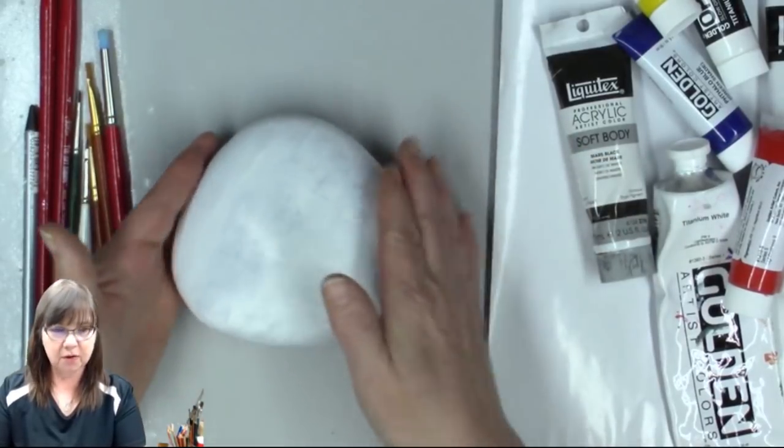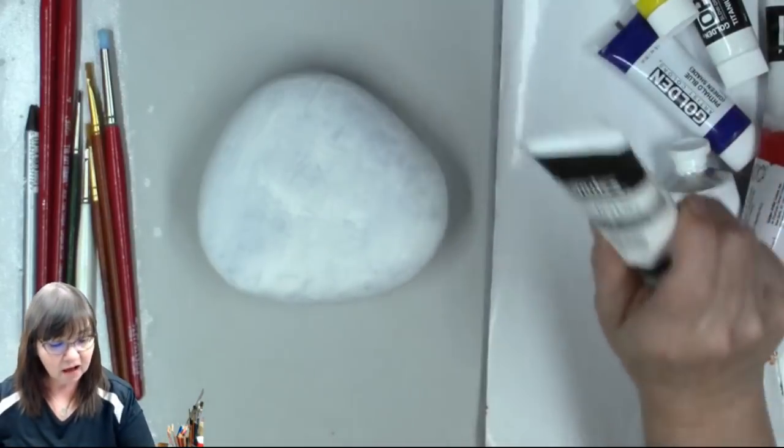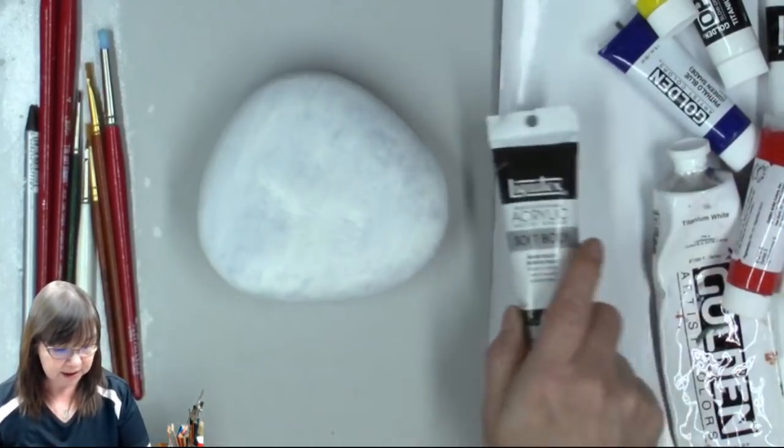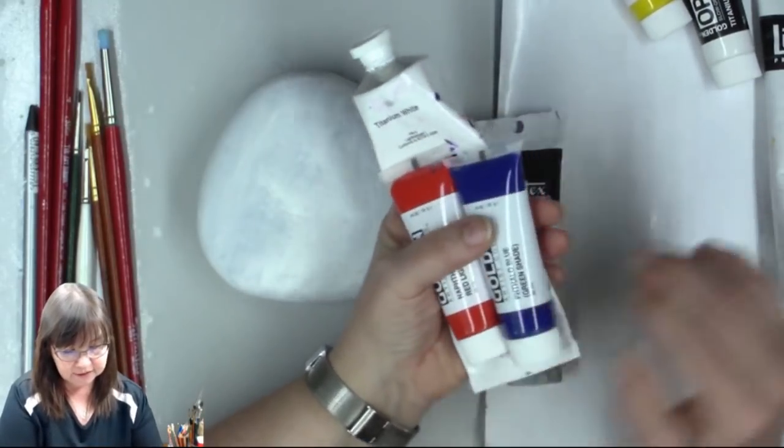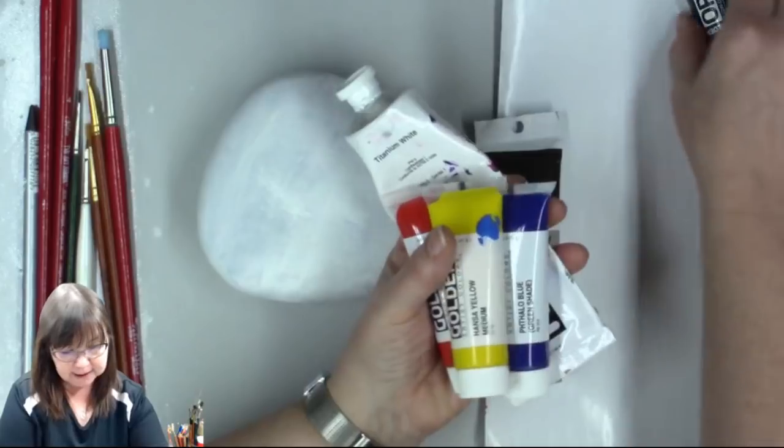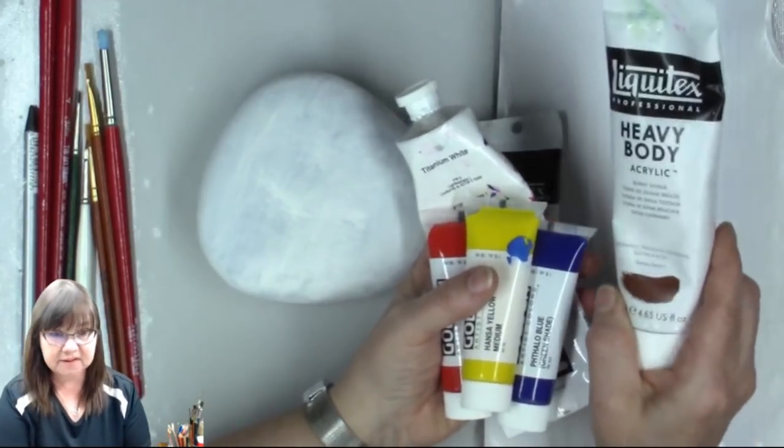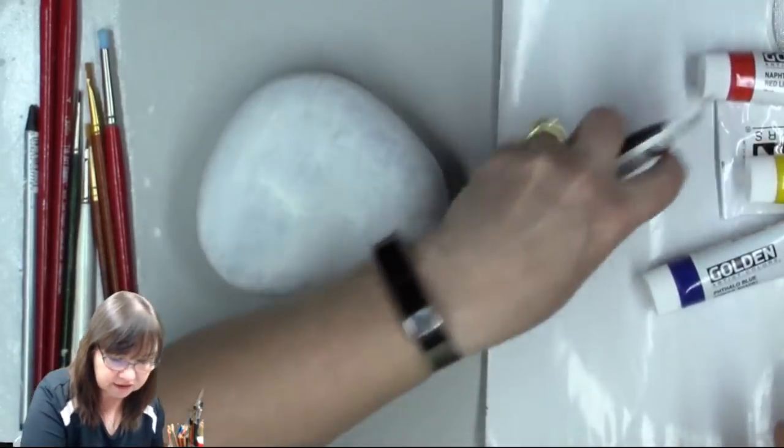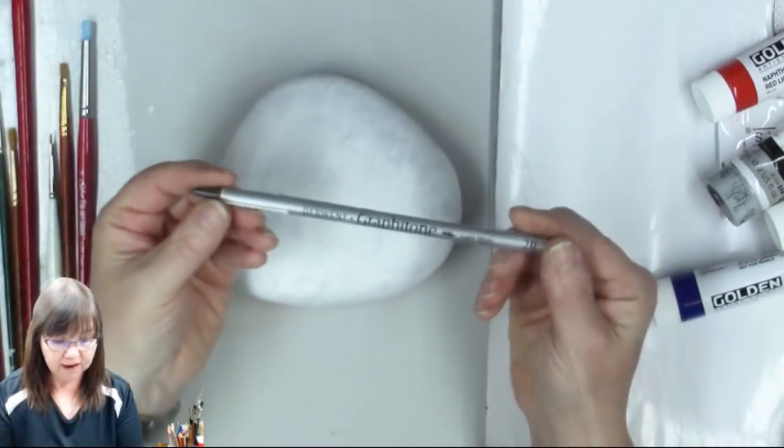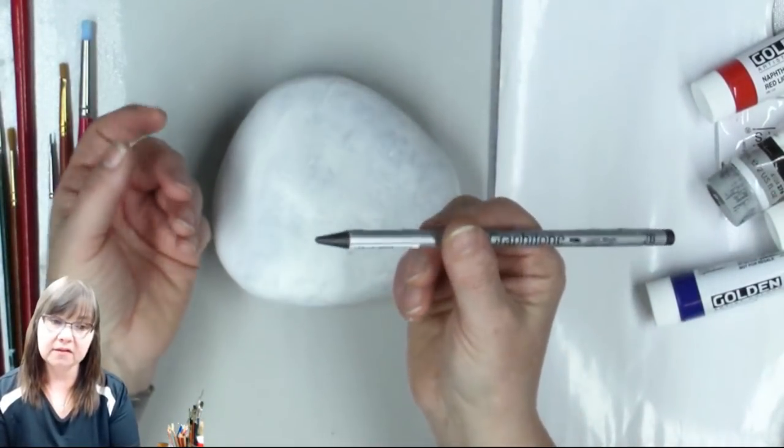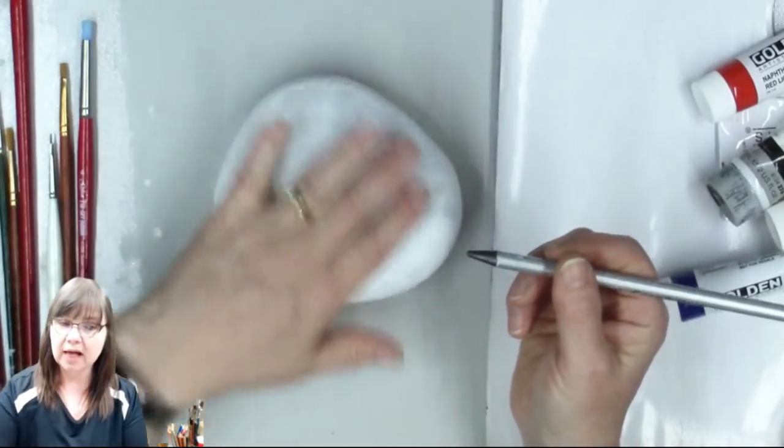I will be using soft body black acrylic paint, titanium white, naphthol red light, phthalo blue, hansa yellow medium, and burnt sienna. I am drawing on this rock with a graphitone pencil, and it is a water-based pencil, so it will wash away. The graphite will actually just disappear into the painting.